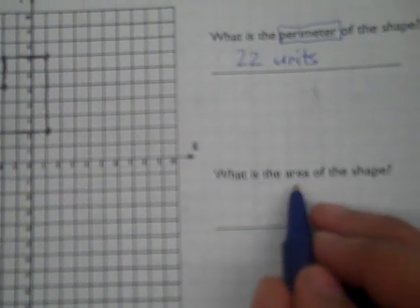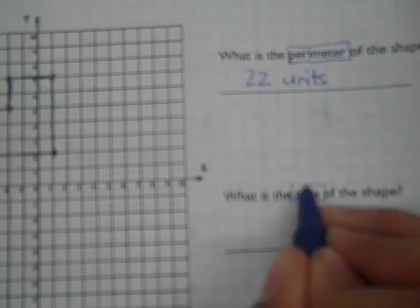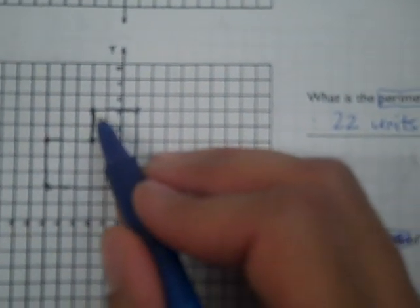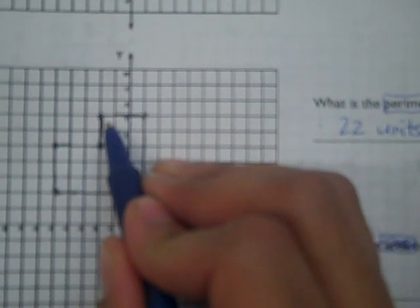Now I'm going to go on and read the next question. The next question asks me, what is the area? Area is the inside. So I'm going to box area and shade in the inside of the shape. Now we know the area is always in squared units, so I'm just going to count the inside squares on a coordinate plane of the shape. Let's count together.